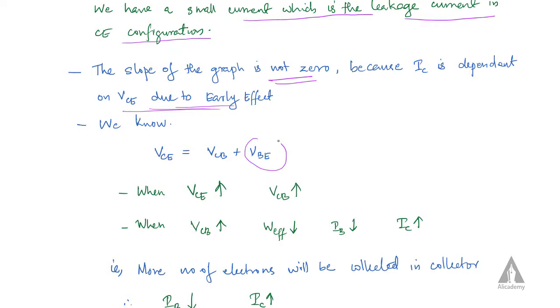The VBE value is constant for silicon — 0.7V for silicon and 0.3V for germanium transistors.